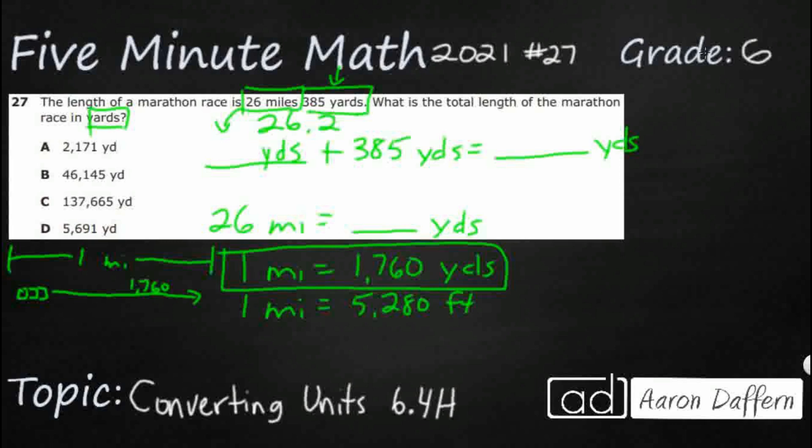So imagine drawing 1760 little boxes. And then if I did that for one mile, I've got to do that for 26 miles. So you're thinking, we are definitely going to need to multiply. And that is correct. When we go from a larger unit to a smaller unit, and we're doing conversions, we're always going to multiply.